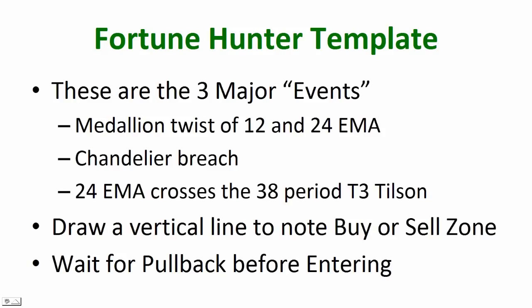Fibonacci is a measurement tool that's going to be an add-on — it's going to help us understand where the market is likely to go next. But first we have to have some kind of pattern in place for our basic understanding of trend. There are three indicators we use. The Medallion is one — it's called a medallion because a sign prints on the chart when there is a twist of the 12 and 24 EMA, exponential moving averages. The 12 would be the average of the last 12 closes, and the 24 would be a slightly longer-term moving average indicating a potential change in trend.